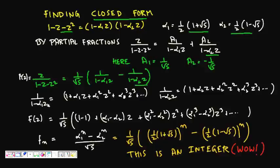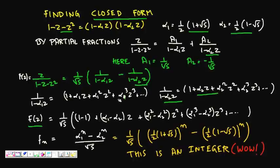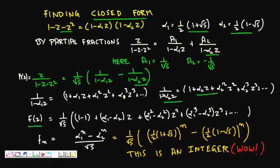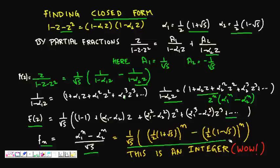Using the infinite geometric series expansion, 1/(1-α₁z) = 1 + α₁z + α₁²z² + α₁³z³ + ..., and similarly for α₂. So F(z) = (1/√5)·[(1 + α₁z + α₁²z² + ...) - (1 + α₂z + α₂²z² + ...)]. The coefficient of z^n is (α₁ⁿ - α₂ⁿ)/√5, and since these are Fibonacci coefficients, F(n) = (α₁ⁿ - α₂ⁿ)/√5.